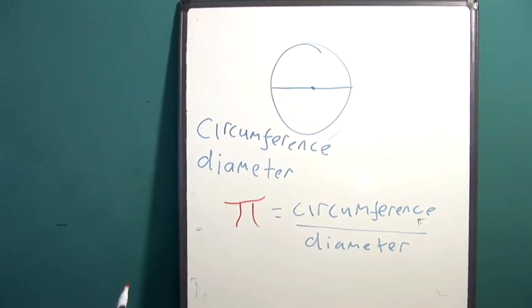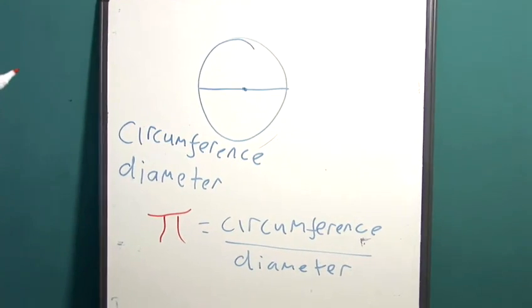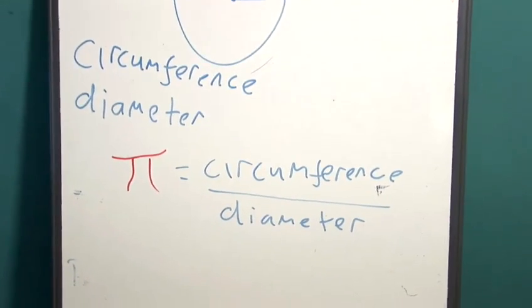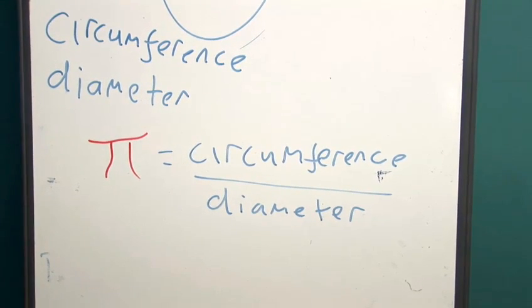Now, if you don't believe me, go out and find yourself something that is a perfect circle, a piece of string, and a ruler, and measure it for yourself. You will find that you get an answer about 3.1.